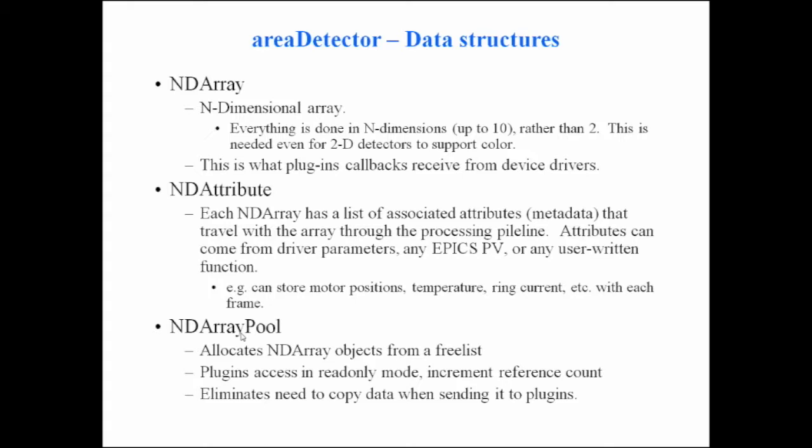Attributes can get their values from driver parameters — like binning or exposure time — or from any EPICS PV. If you assign an attribute an EPICS PV, it puts a monitor on that PV, and every time it gets the attribute value, it gets the latest value of that PV. So your array can have associated with it the ring current and the positions of all motors at the instant it was collected, traveling through the pipeline with it.